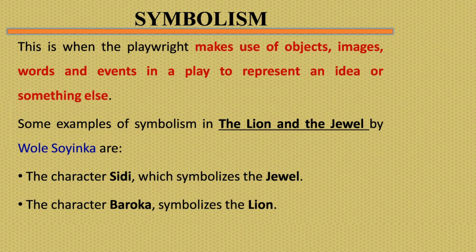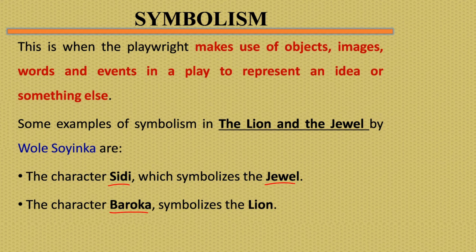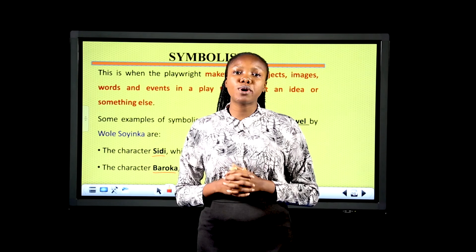Symbolism is when a playwright makes use of images, objects, events, or words to represent an idea in a play. For example, in the play The Lion and the Jewel by Wole Soyinka, the character Sidi represents or symbolizes the jewel, and the character Baroka symbolizes the lion.